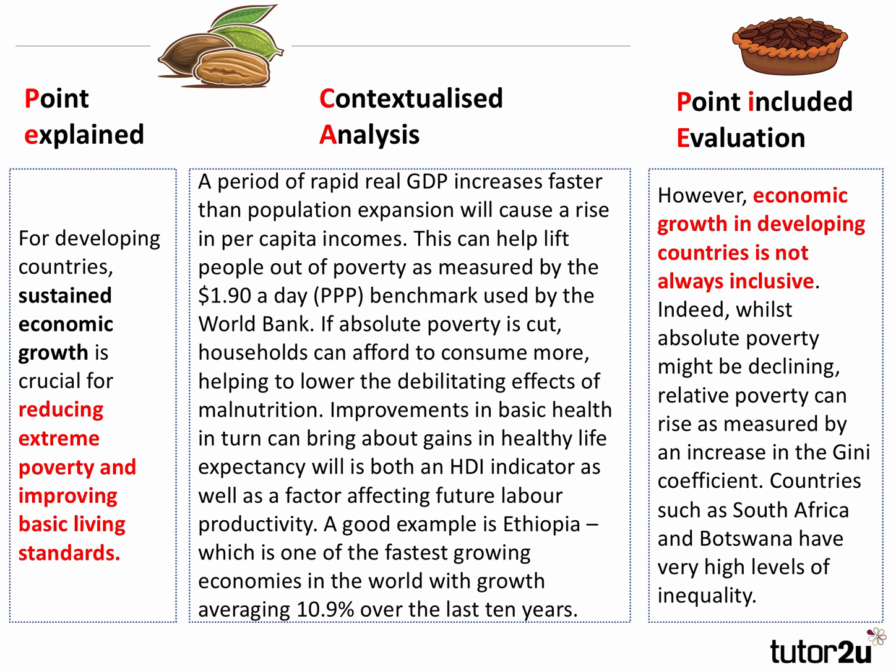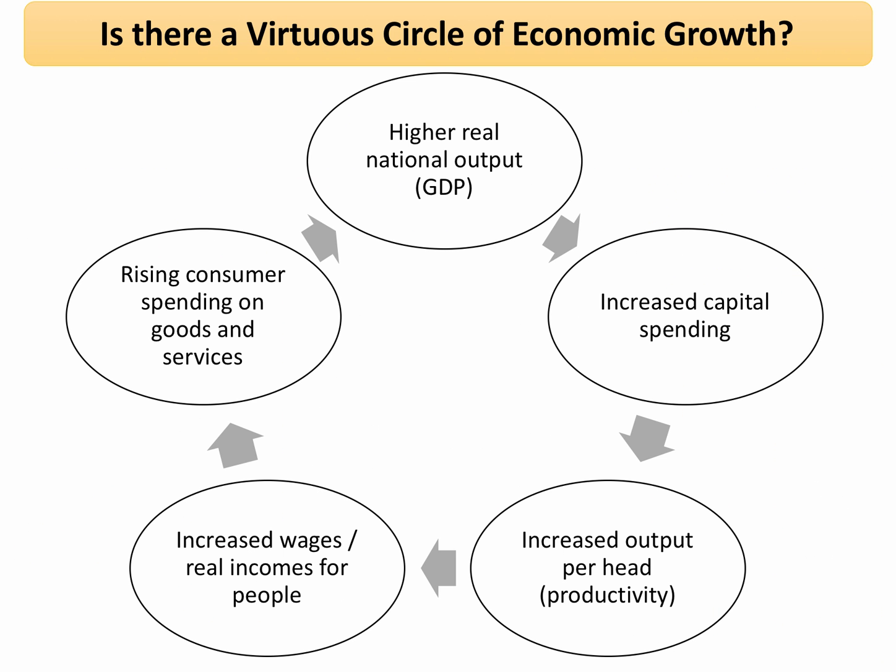However, economic growth in developing countries is not always inclusive. Whilst absolute poverty might be falling, relative poverty can rise, as measured by an increase in the Gini coefficient. Countries such as South Africa and Botswana are two good examples of countries with very high levels of inequality. So we're making a point, building a point, and evaluating the point.